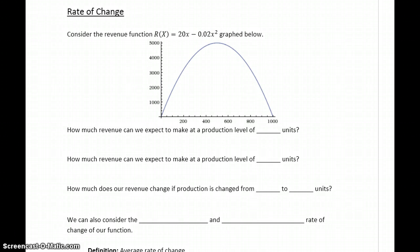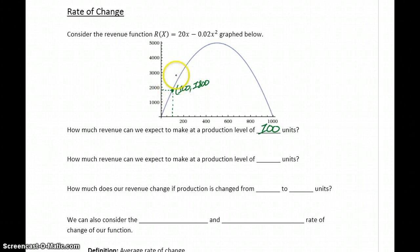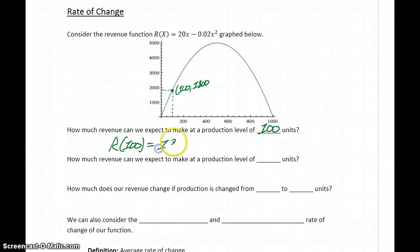We want to start off by answering a couple of simple questions. The first being: how much revenue can we expect to make at a production level of 100 units? Looking at our graph, there are two ways to go about this. We can either take that value of 100 and plug it into our function, or we could read this off our graph. If we trace up from X equals 100, we should find that this point is the point (100, 1800). So R of 100 equals 1800.